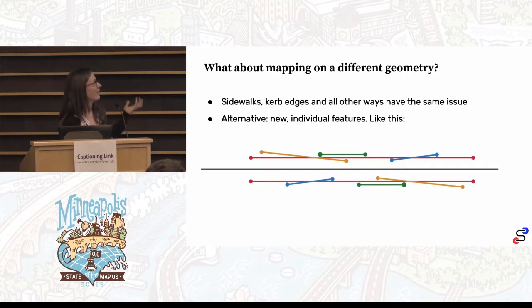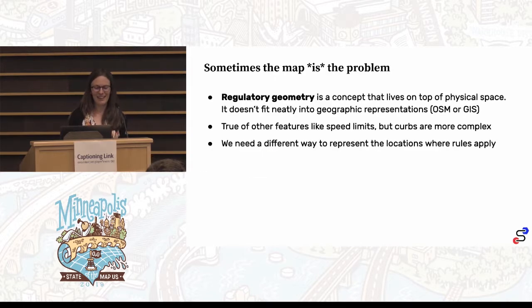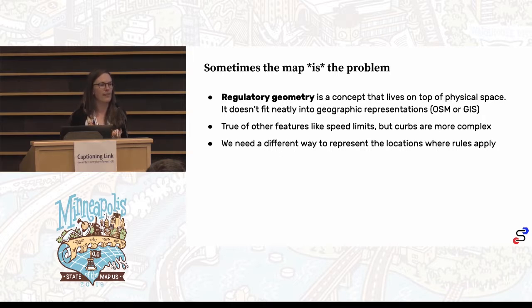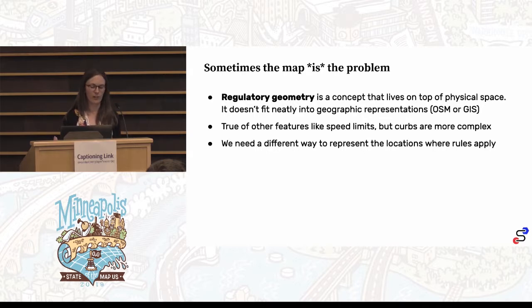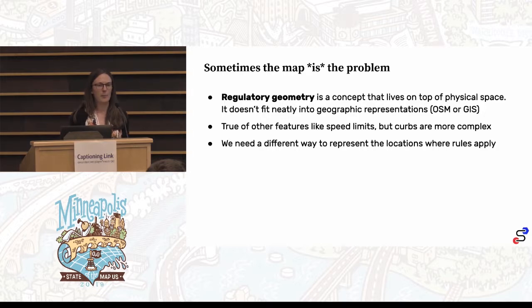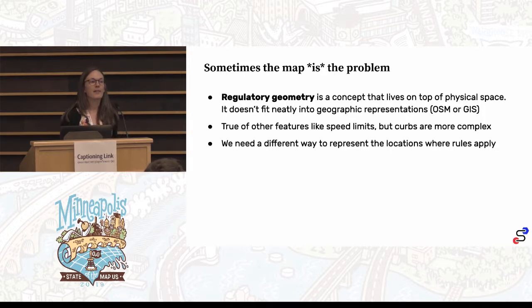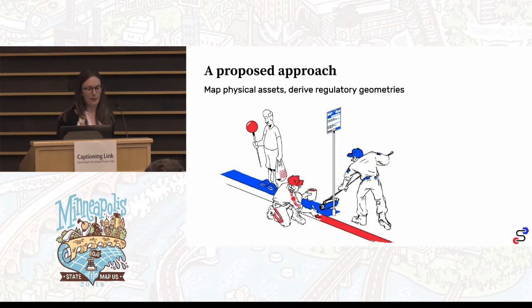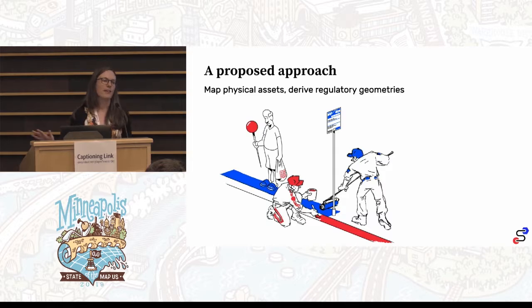You could say map it on a different geometry, but sidewalks and curb edges have the same problem. If you start to think about an area, you've actually magnified that in another dimension. So that doesn't work. Fundamentally, sometimes the map is the problem — not everything can be represented with geographic coordinates. So we draw a line. We distinguish between a physical asset and what we call a regulatory geometry — a concept that lives on top of physical space, like a road closure, like a speed limit, like a curb usage restriction — that don't fit neatly into OSM or any other type of GIS.